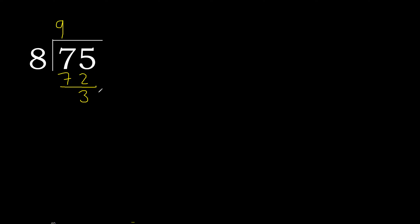That is not a whole number, therefore complete — always complete with 0. Here we place the decimal point: 0 point. Bring down: 30.